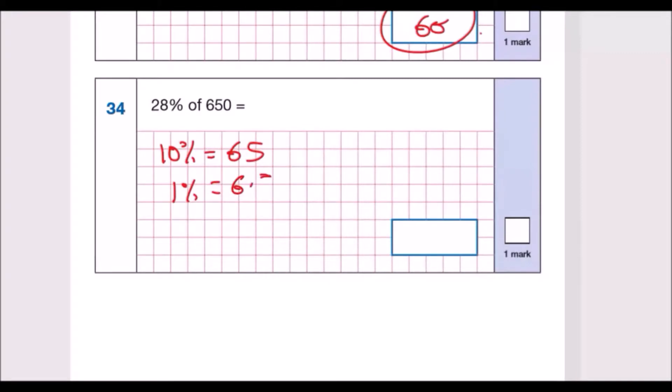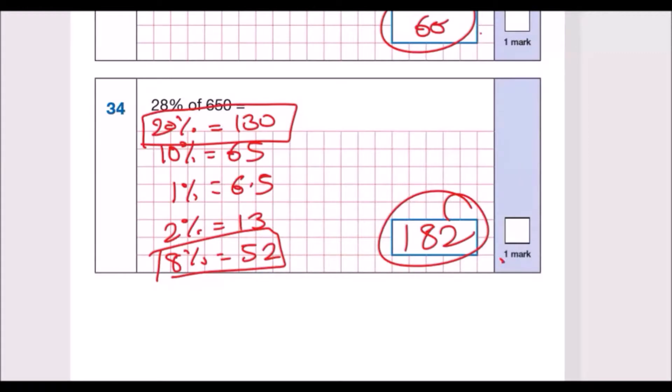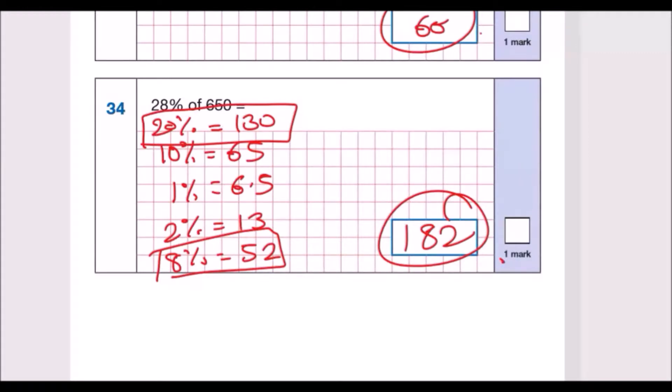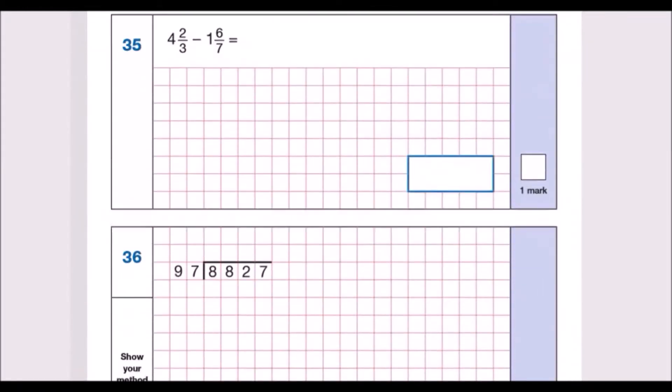1% is going to be 6.5 because you divide by 10. That means 2% is going to be double this, which is 13. To find 8%, times it by 4: 13 times 4 is 52. To get 20%, double the 65 which is 130. Therefore 28% would be 130 plus 52, which is 182. If you got this, give yourself a pat on the back.